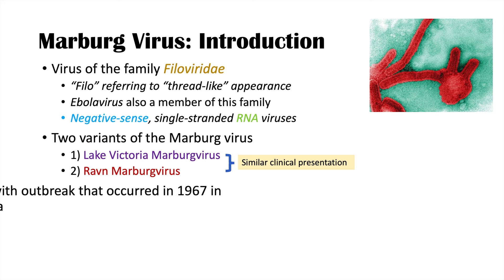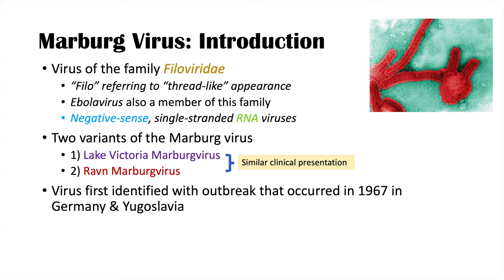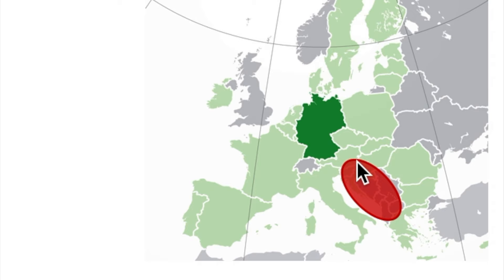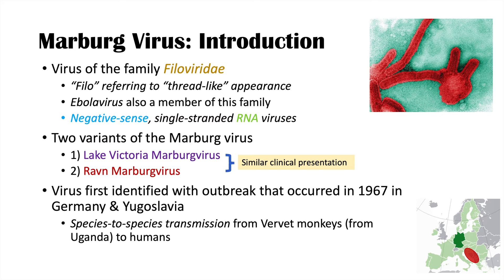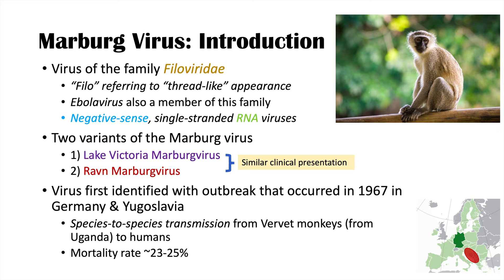The virus was first identified in an outbreak that occurred in 1967 in Germany and Yugoslavia. What is believed to have happened is that there was a species-to-species transmission of the Marburg virus from vervet monkeys to humans. Vervet monkeys were brought from Uganda, they carried the virus, and they transmitted it to humans in Europe. During this first outbreak, the mortality rate was 25 percent — a quarter of infected individuals died.